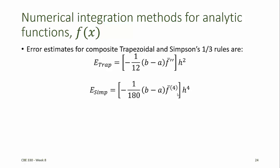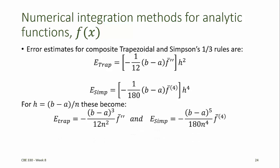The estimated error for Simpson's 3/8th rule is also of order h to the 4th. If we substitute h = (b minus a) divided by n, the length of the domain divided by n, then the trapezoidal rule error is proportional to 1 over n squared, and the error for Simpson's rule is proportional to 1 over n to the 4th power.